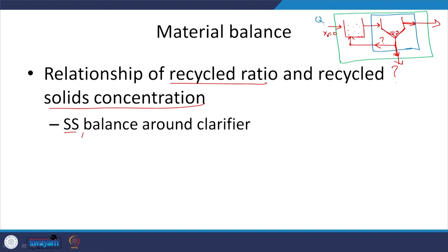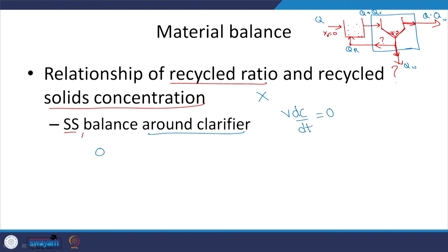The flow coming in is Q, the effluent is Q minus Q_w, and the waste sludge is Q_w. The recycle flow is Q_r. So the flow entering the clarifier is Q plus Q_r. We apply the mass balance on x around the clarifier. At steady state, V dc/dt equals zero. Microorganisms enter via (Q plus Q_r) times x. They leave via three routes: (Q minus Q_w) times x_effluent, Q_w times x_r in the waste sludge, and Q_r times x_r in the recycle stream.